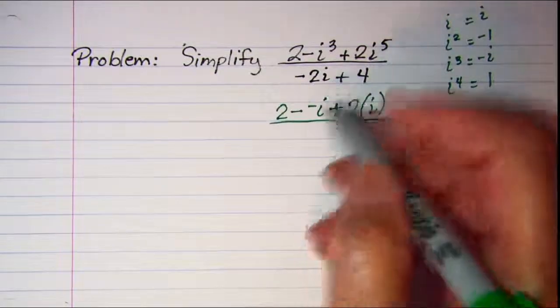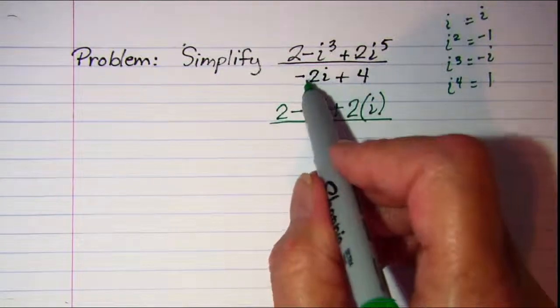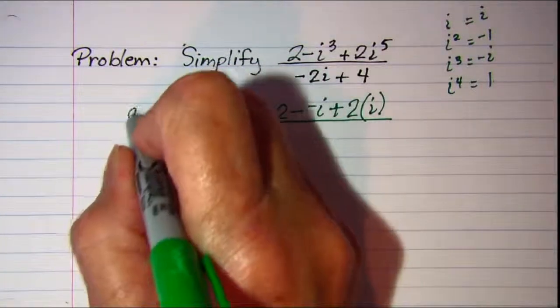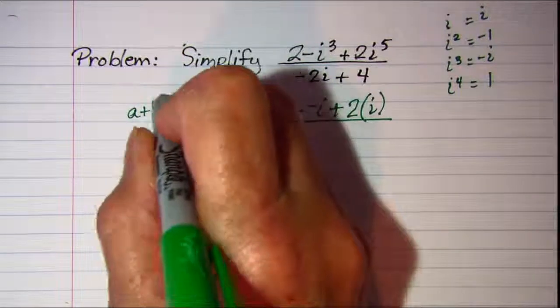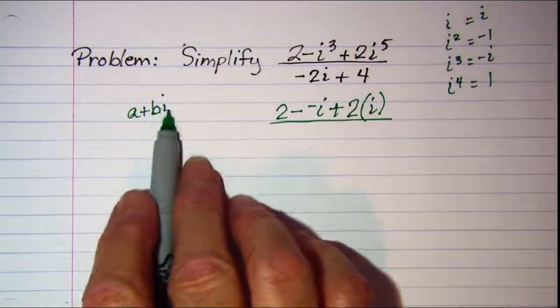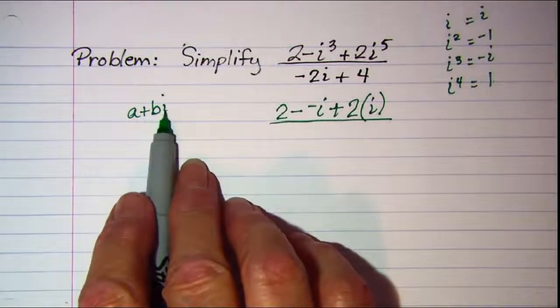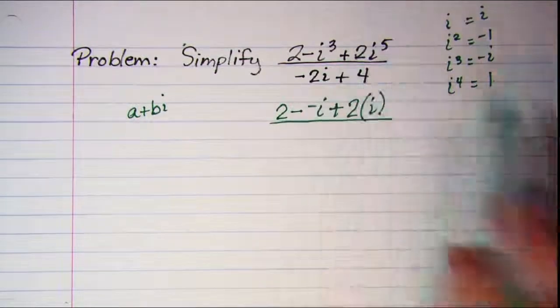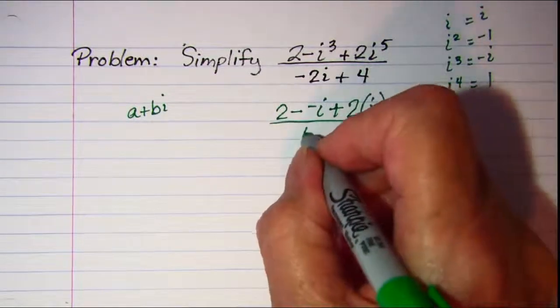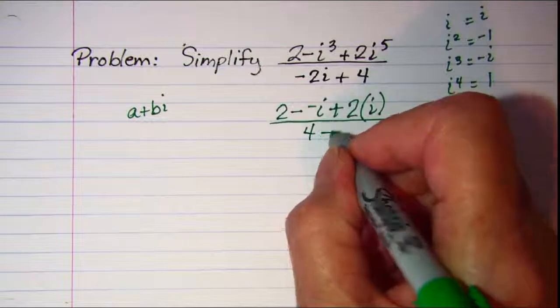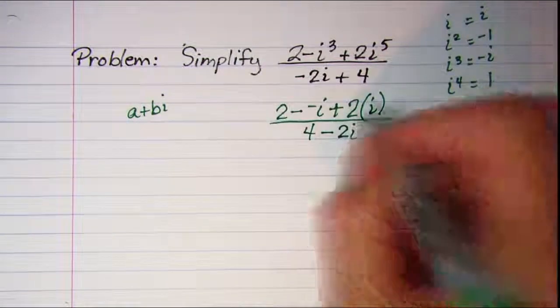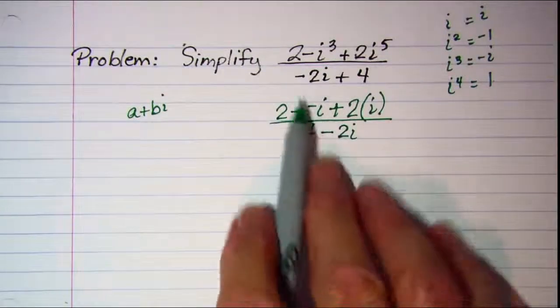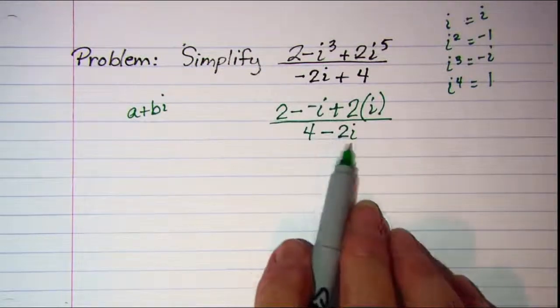And in the bottom I have negative 2i plus 4. Now when we write complex numbers we usually write them in the form a plus bi so that the imaginary part is in the back. So I'm going to change this. It's just the commutative property for addition that allows me to do that. But it looks better when I write it like it's supposed to be. So we have 4 and then the imaginary part is negative 2i which I wrote back here.